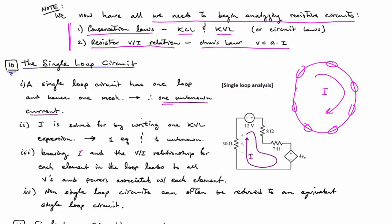The nice, simple characteristic of this type of circuit is that there is only one unknown, the current I. Current I is solved for by writing one KVL equation, which sums all the voltages around that one loop. So we have one equation and one unknown.